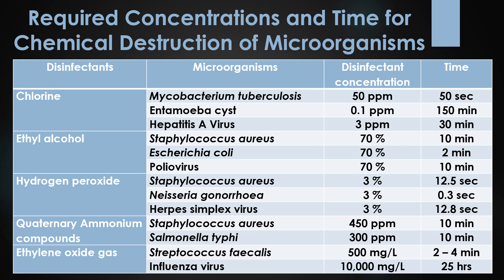3 ppm of chlorine is required for the destruction of Hepatitis A virus and it needs 30 minutes. The next disinfectant is ethyl alcohol or ethanol. 70% ethanol is required for the destruction of Staphylococcus aureus, E. coli, and poliovirus — taking 10 minutes for Staphylococcus aureus, 2 minutes for E. coli, and 10 minutes for poliovirus.